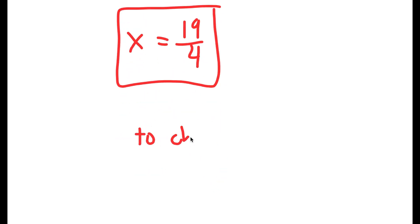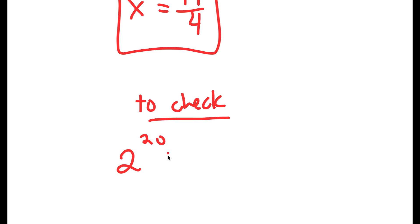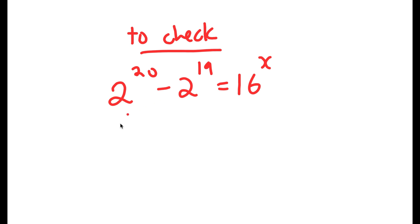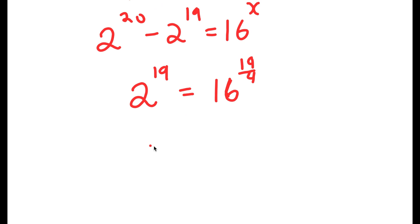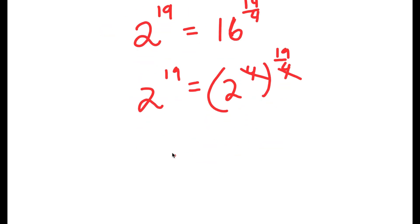To check: my original equation was 2 to the power of 20 minus 2 to the power of 19 is equal to 16 to the power of x. We already know that 2 to the power of 20 minus 2 to the power of 19 equals 2 to the power of 19. So we get 2 to the power of 19 equals 16 to the power of 19/4. Since 16 equals 2 to the power of 4, we have 2 to the power of 4 to the power of 19/4, and the 4s cancel, giving 2 to the power of 19 equals 2 to the power of 19.